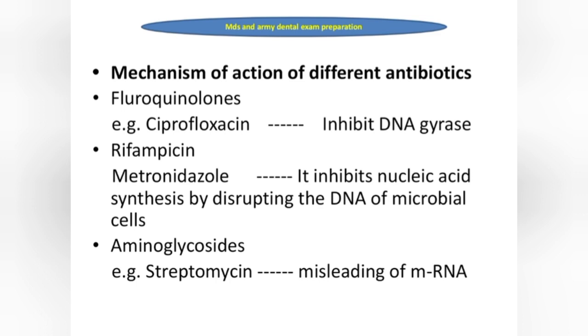Aminoglycosides — for example, streptomycin — their mechanism of action is misreading of mRNA.